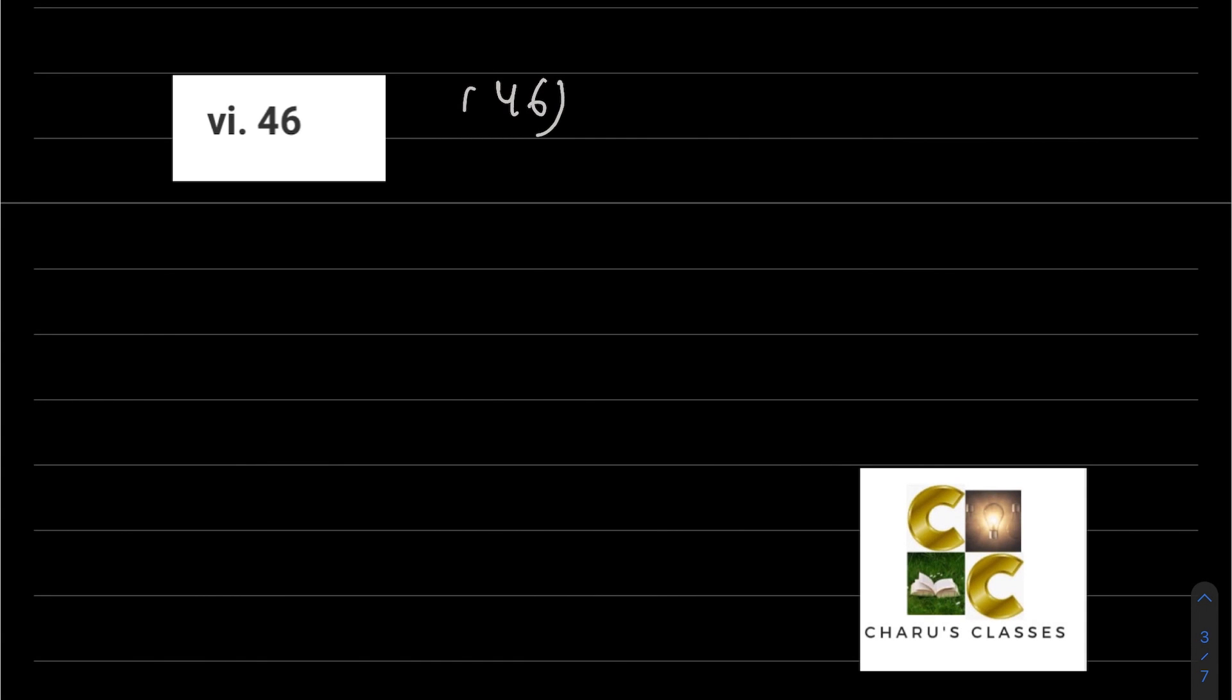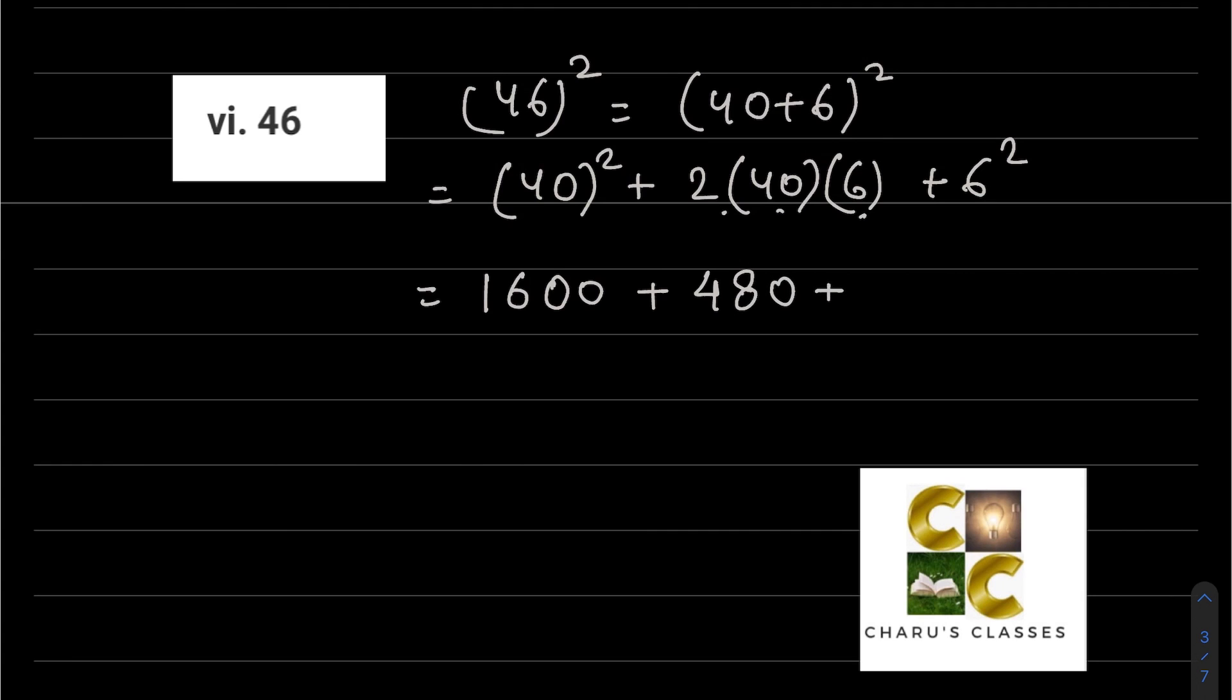Sixth part: 46. So 46 whole squared is 40 plus 6 whole squared, which is a squared plus 2 into a into b plus b squared. 40 squared is 40 into 40, which is 1600. 2 into 40 is 80, 80 into 6 is 480. And 6 into 6, 6 squared is 36. So adding all these - 1600, 480, and 36 - the answer comes to 2116. You can also do 46 into 46 to reach the same answer, because that is 46 squared.